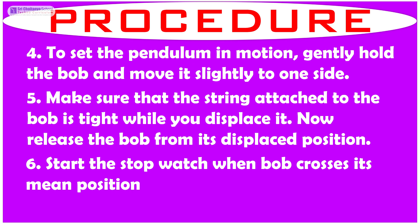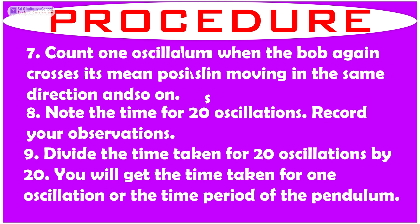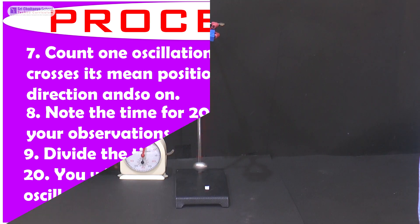To set the pendulum in motion, gently hold the bob and move it slightly to one side. Make sure that the string attached to the bob is tight while you displace it. Now release the bob from its displaced position. Start the stop watch when the bob crosses its mean position. Count one oscillation when the bob again crosses its mean position moving in the same direction.